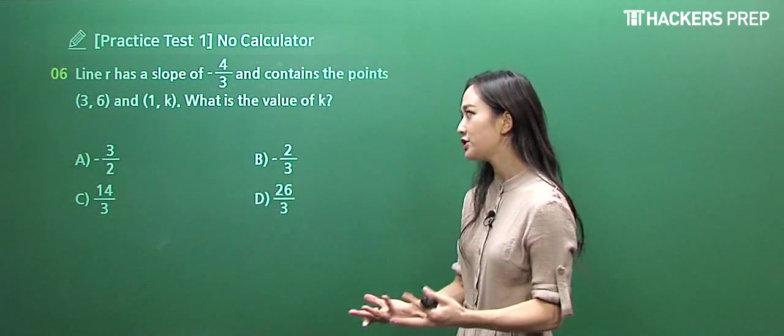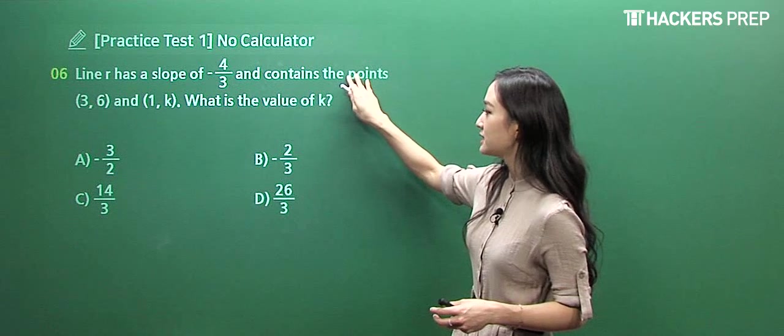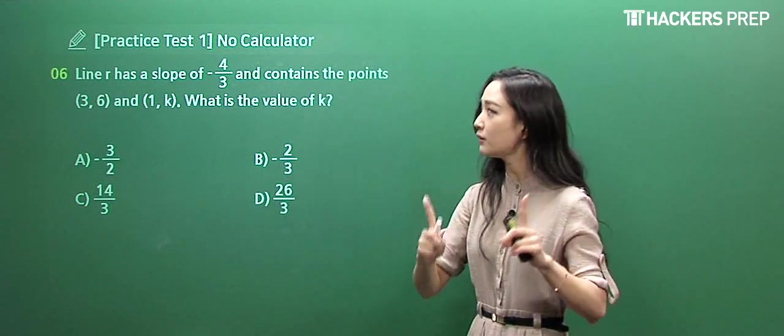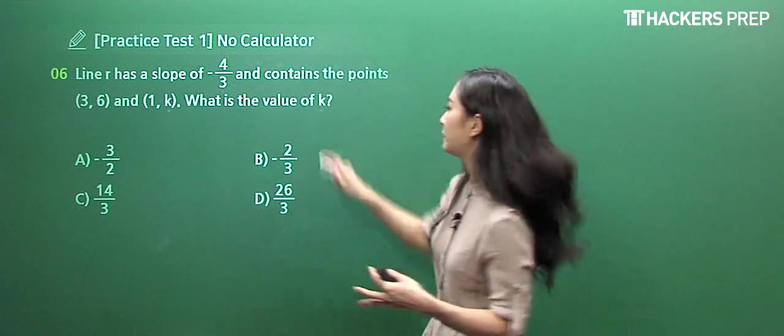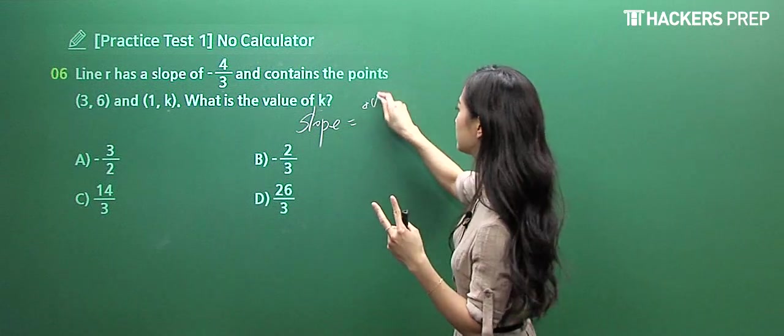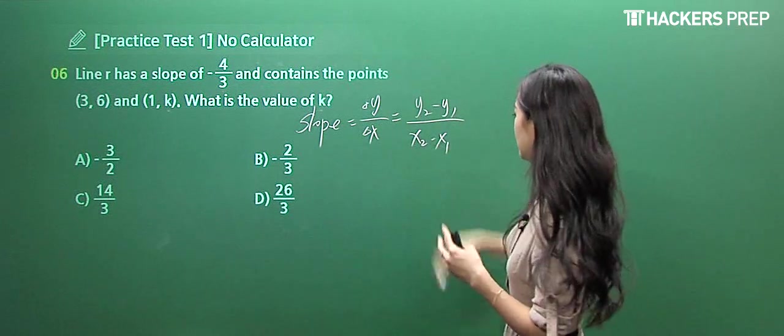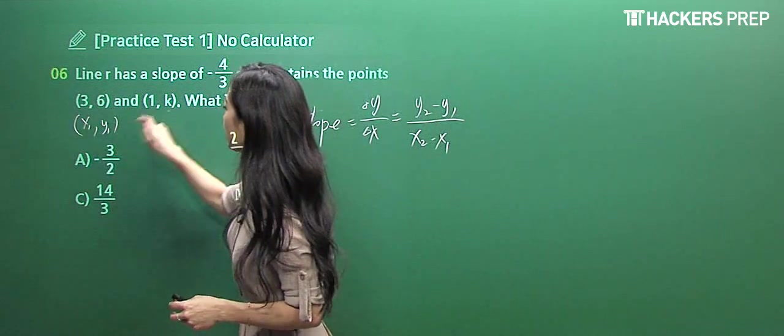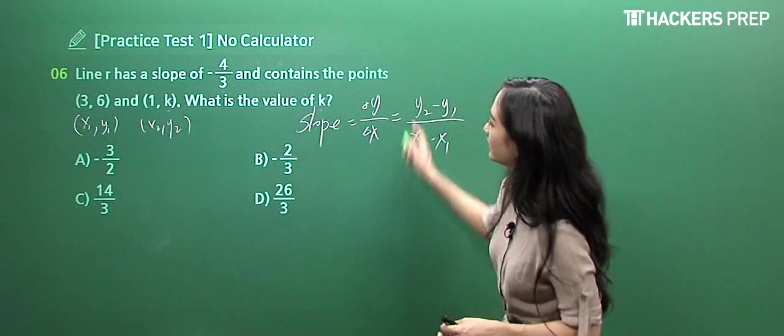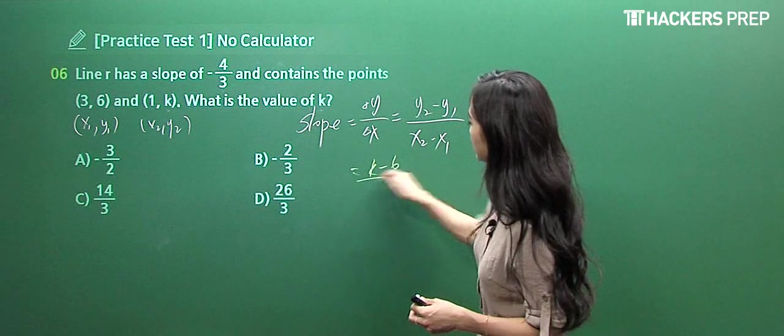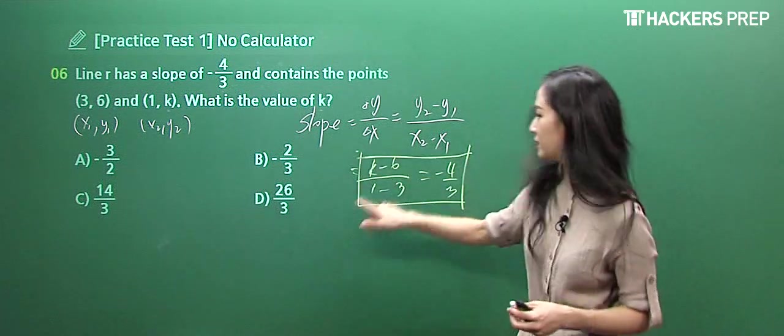Moving on to number six, they said line r has a slope of -4/3 and contains two specific points (3, 6) and (1, k). They're asking for the value of k. Let's transform this into an equation. The slope is rise over run, which is (y₂ - y₁)/(x₂ - x₁). I'm going to let the first value be x₁, y₁ and the second be x₂, y₂. So y₂ is k, y₁ is 6, x₂ is 1, x₁ is 3, and the slope is -4/3.